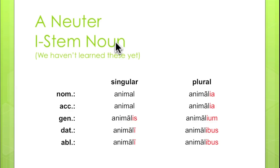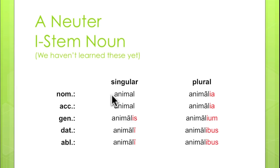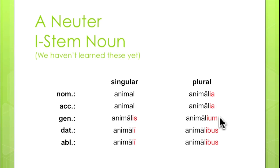Let's look at a neuter i-stem noun. We haven't learned any neuter i-stem nouns yet, but they're very easy and we will learn them in about a month or so. The noun we're going to use is 'animal, animalis,' neuter — which actually means 'animal' in Latin. Once again, there's no particular ending in the nominative, and since this is a neuter noun, the same is true for the accusative. But from the genitive singular onward we have standard endings: animalis, animali, animali — animalia, animalia, animalium, animalibus, animalibus. The standard endings in red are: -is, -i, -i, -ia, -ia, -ium, -ibus, -ibus.